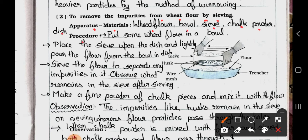Procedure: Put some wheat flour in a bowl. Place the sieve upon the dish and lightly pour the flour from the bowl in the dish. Sieve the flour to separate any impurities in it. Observe what remains in the sieve after sieving.